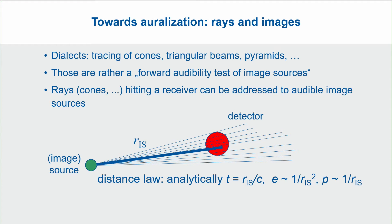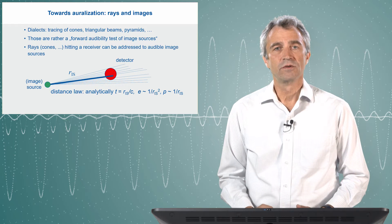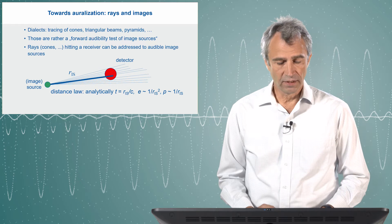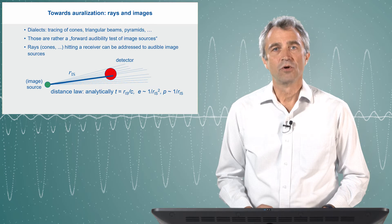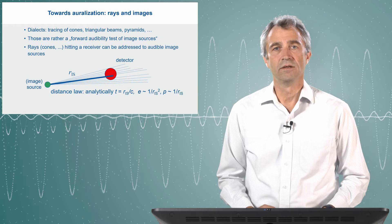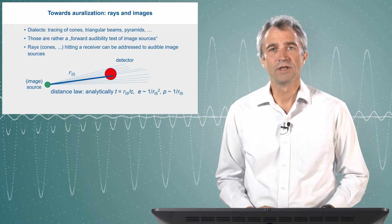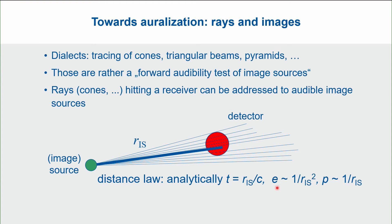The next step is to understand that ray tracing can well be the basis for image source detection. If a ray hits a receiver, we also consider that this ray can be addressed to an audible image source. This kind of variant of ray tracing is often called cone tracing, beam tracing, or pyramid tracing. The key difference is that energy detection is not obtained by counting, but by analytically accounting for the travel time and the relative energy, which is proportional to 1 over R squared. Accordingly, the sound pressure goes with 1 over R, where R is the distance between the source and the receiver.